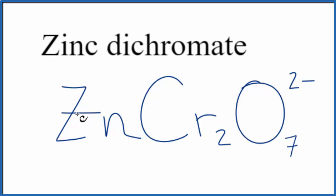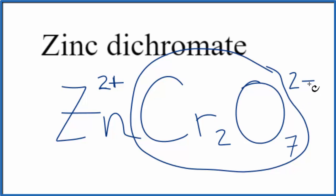So zinc, if you look at zinc on the periodic table, even though it's listed with the transition metals, it's always 2+. So zinc has a 2+ ionic charge, and then this dichromate ion right here, that's 2-.